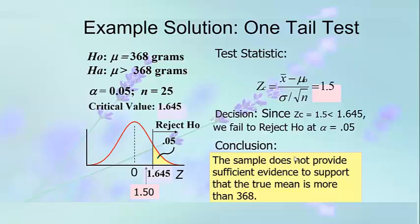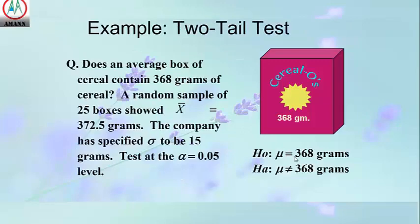Since the computed z of 1.5 is less than the critical value of 1.645, we fail to reject the null hypothesis at alpha = 0.05. We conclude that the sample does not provide sufficient evidence to support the claim that the true mean is more than 368 grams.